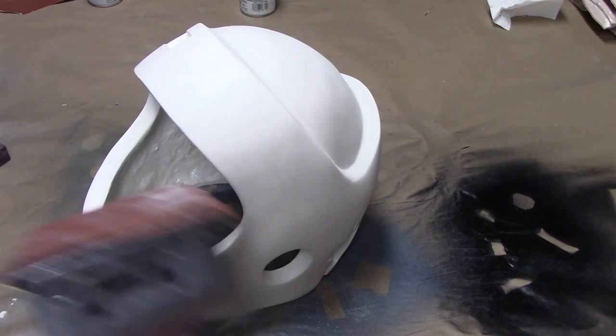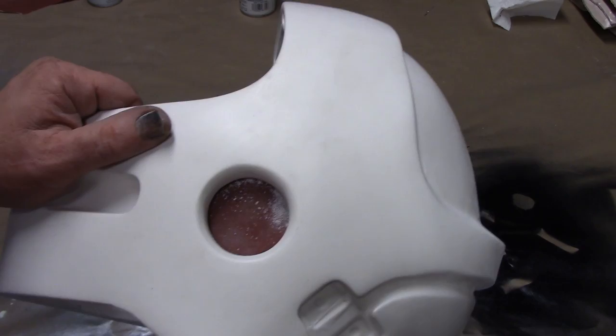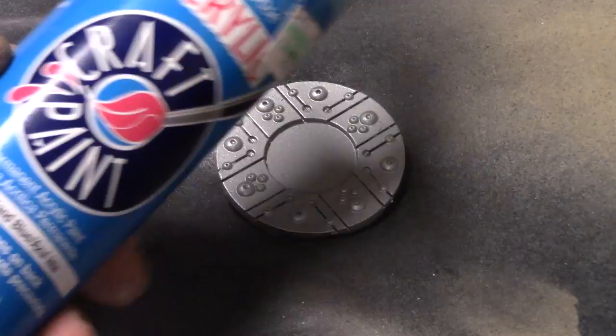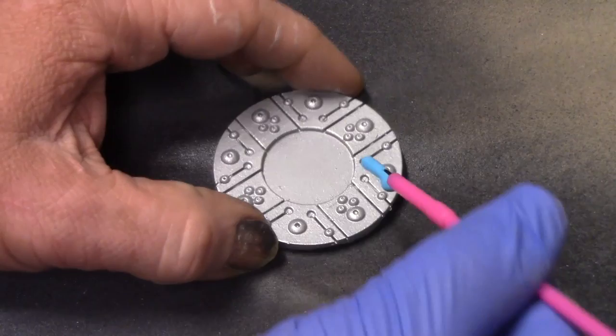I also use my oscillating sander and I came in here and flattened out the inside of that hole. I'm using a color called Island Blue to paint these side parts here.